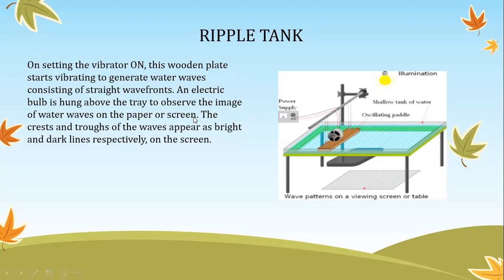An electric bulb is hung over the tray to observe the image of water waves on a paper screen. The crests and troughs appear as bright and dark lines respectively on the screen.